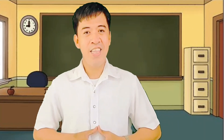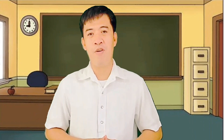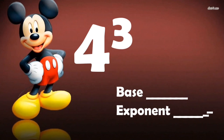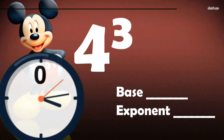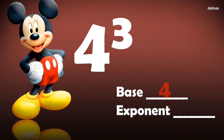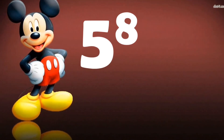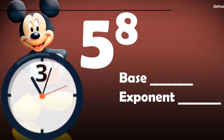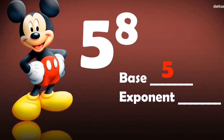Now, let's identify the base and exponent of the following examples. First is 4 cubed. What is the base and what is the exponent? If your base is 4 and your exponent is 3, you are correct! Second, 5 to the 8th power. Can you identify what is the base and exponent? Yes! The base is 5 and the exponent is 8. You are correct!